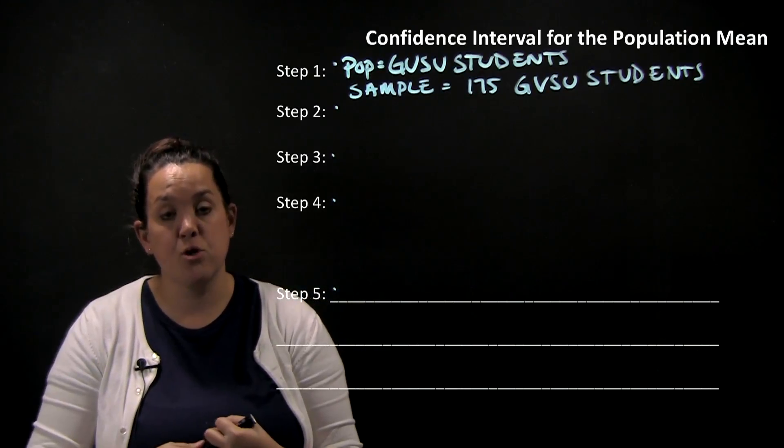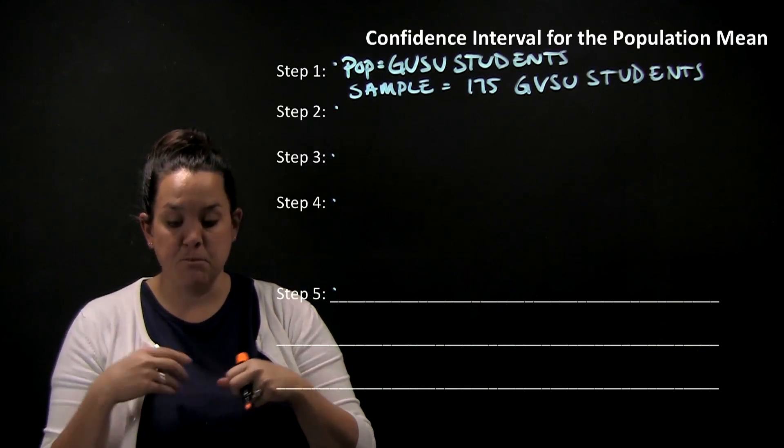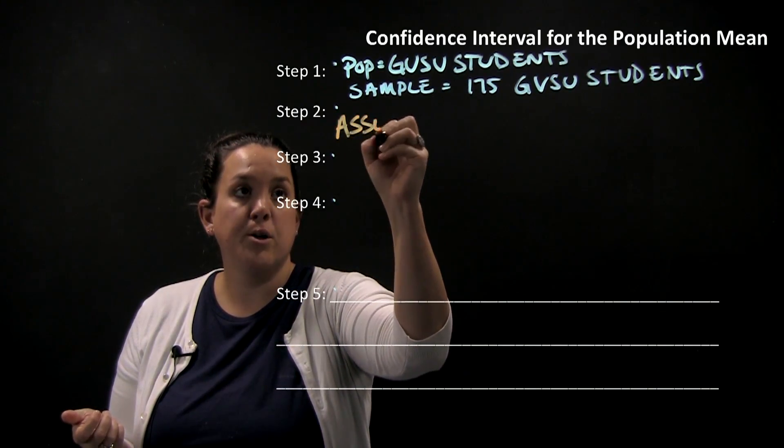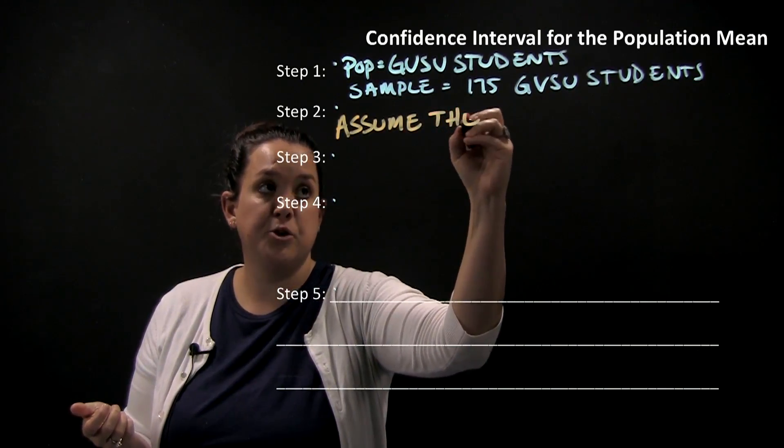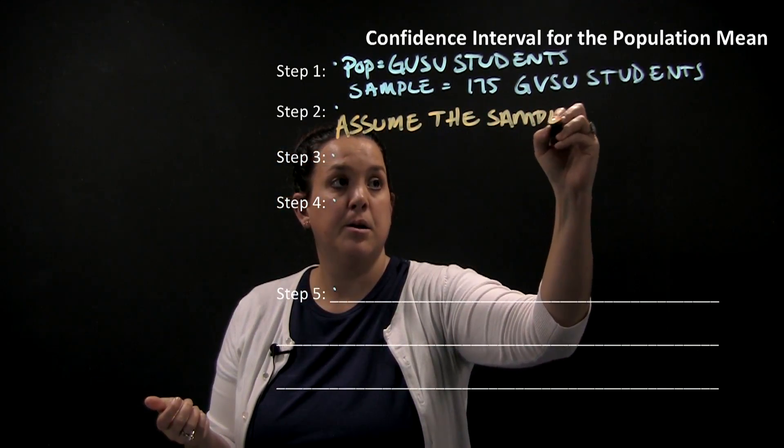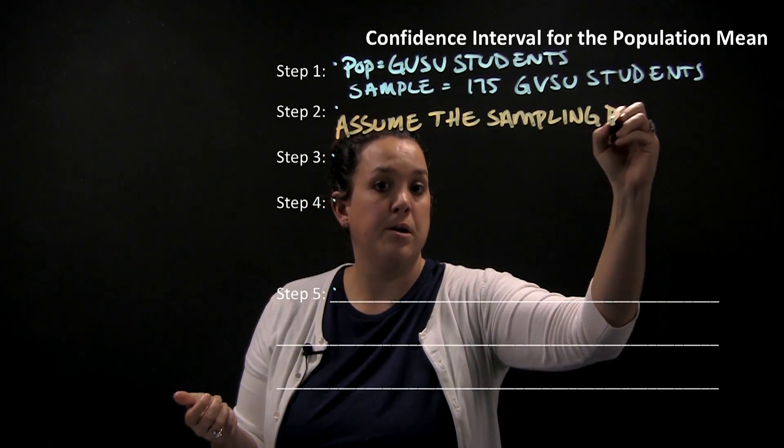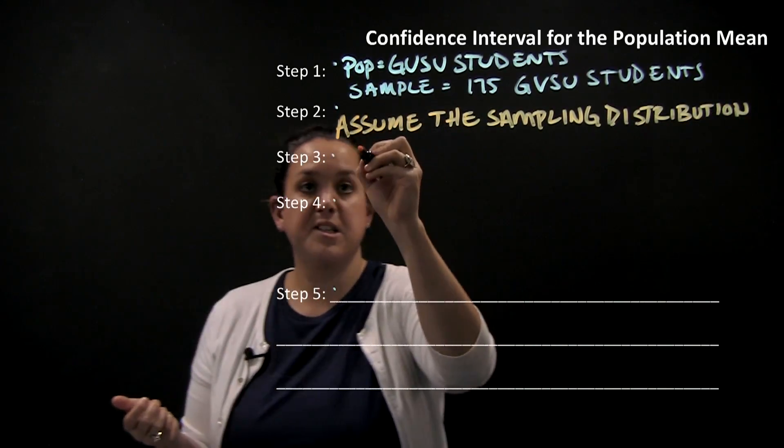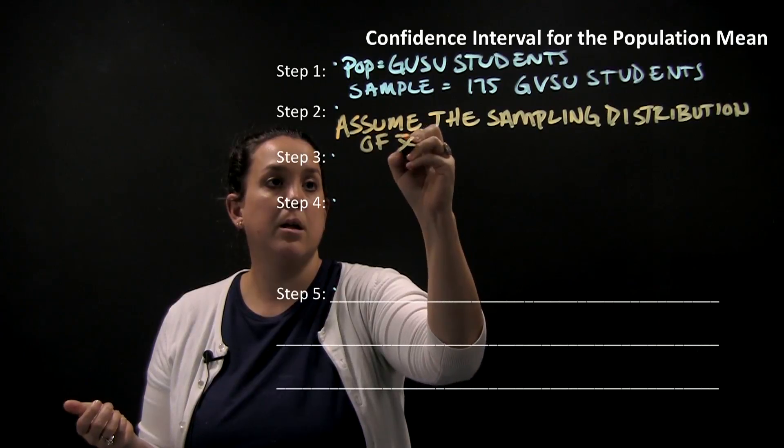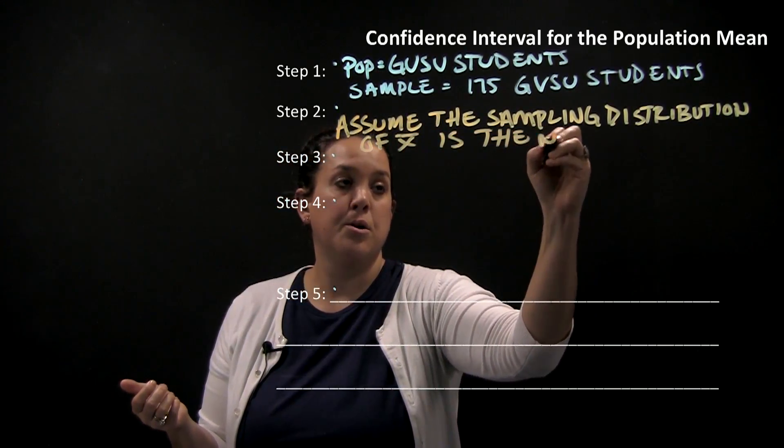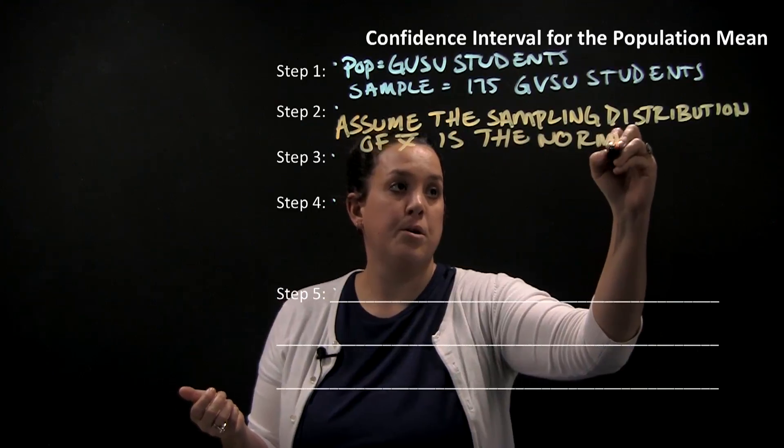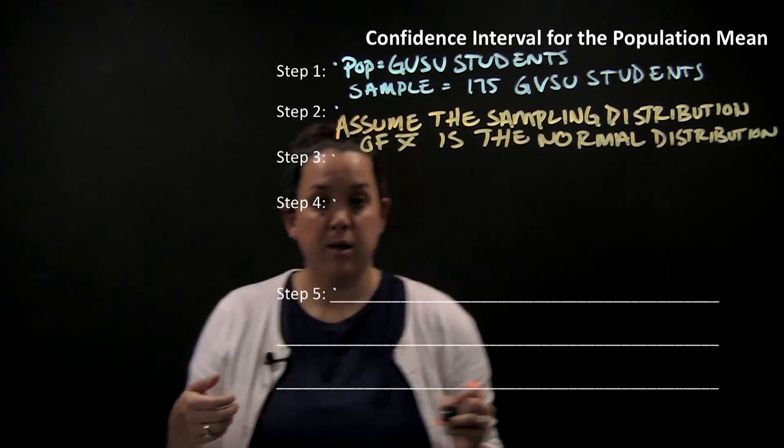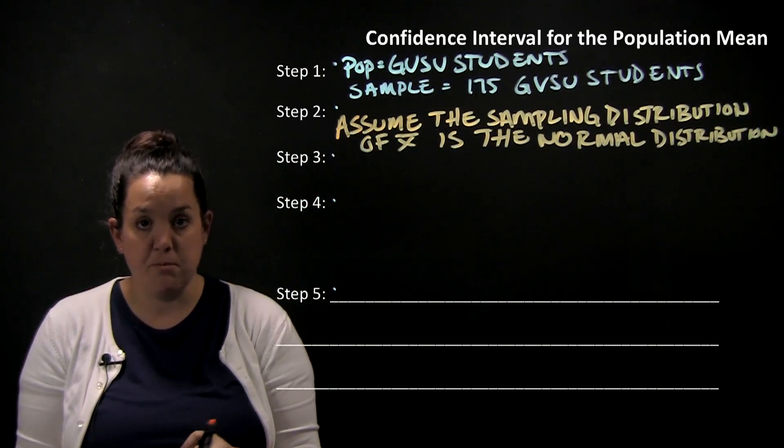The second step is stating the assumptions. Remember that assumptions have to do with the sampling distribution. So here we are going to assume the sampling distribution of X bar is the normal distribution. To be able to use the formulas and calculations that we have, this is an assumption that we have to make.